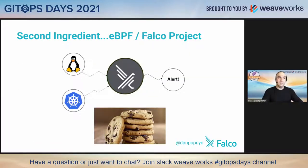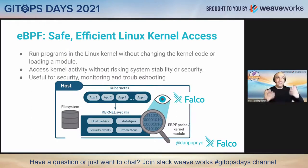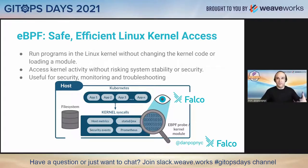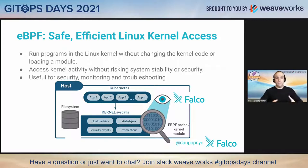Your second ingredient is eBPF, which stands for Enhanced Berkeley Packet Filtering. eBPF provides safe, efficient Linux kernel access, allowing you to run code in the Linux kernel without having to submit a PR to actual kernel updates, which are usually much slower to deliver. You can access kernel activity without risking system stability or security, and it's very useful for things like security monitoring and troubleshooting.